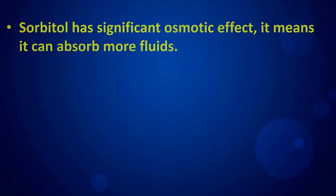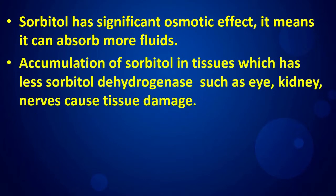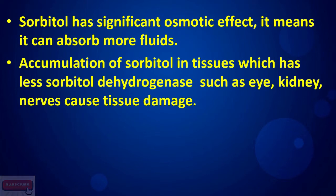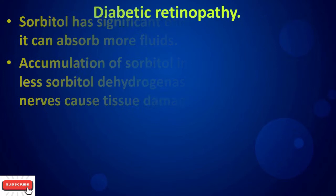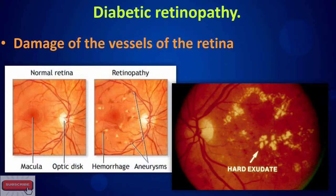Sorbitol has a significant osmotic effect, meaning it can absorb more fluids. Accumulation of sorbitol in tissues that have less sorbitol dehydrogenase — such as the eye, kidney, and nerves — causes tissue damage. This mechanism is central to diabetic retinopathy, which involves damage to the vessels of the retina.